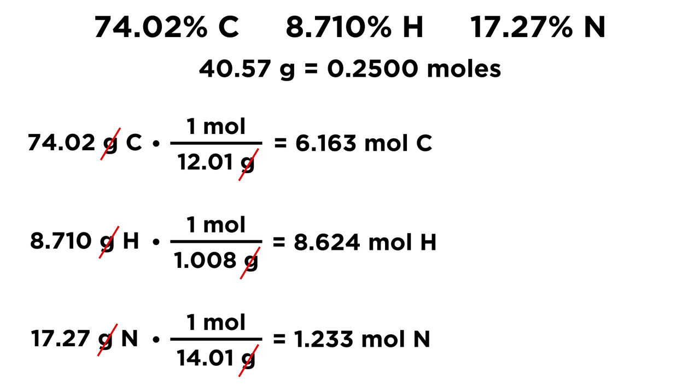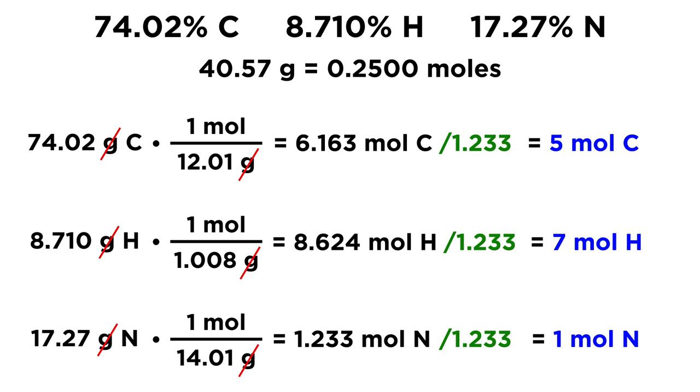So in this sample, we have this many moles of each of these elements. So this tells us something about the ratio of these elements in the compound. What we can do is divide each of these values by the smallest, so that we get 1 for the smallest one, and then some ratio for the others. And hopefully they'll turn out to be integers, and that will give us the empirical formula. So if we divide each of these by the smallest one of them, which is 1.233, we end up with 1 mole of nitrogen, and we also end up with integer values for carbon and hydrogen. We have 5 and 7.